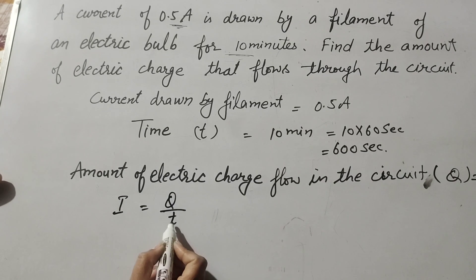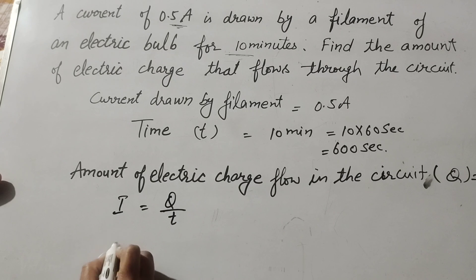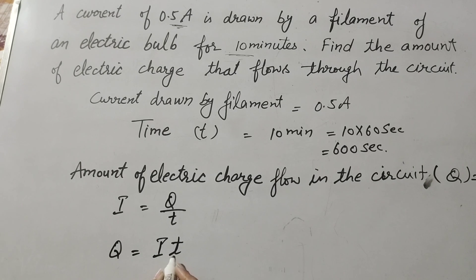I is electric current, Q is charge, T is time. And we find Q. It is equal to I multiply by time.